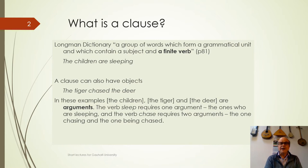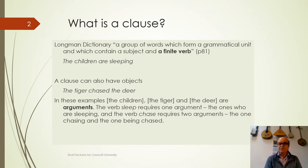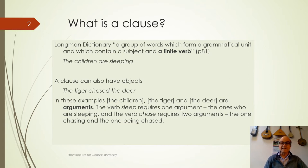The matter that we're talking about today is the alignment, the relationship between a verb and its arguments. These are all formed together as a clause, so what is a clause? A group of words which form a grammatical unit and which contain a subject and a finite verb, such as 'the children are sleeping.' A clause can also have objects, such as 'the tiger chased the deer.'